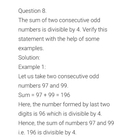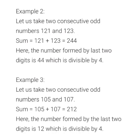We have selected two consecutive odd numbers: 97 and 99. We have to add these two numbers and find out whether their sum is divisible by 4 or not. The sum of 97 plus 99 is 196. The divisibility rule of 4 says that if the last two digits of any number are divisible by 4, then the whole number is divisible by 4. Here 96 in 196 is divisible by 4, so 196 is divisible by 4.